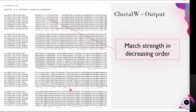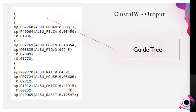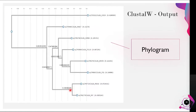There is a link attached where the same sequences can also be obtained. The aligned sequences are obtained with match strength in decreasing order. A guide tree is obtained, and a phylogram for the sequences is also constructed by the program algorithm. We shall now demonstrate how to do the multiple alignment method.